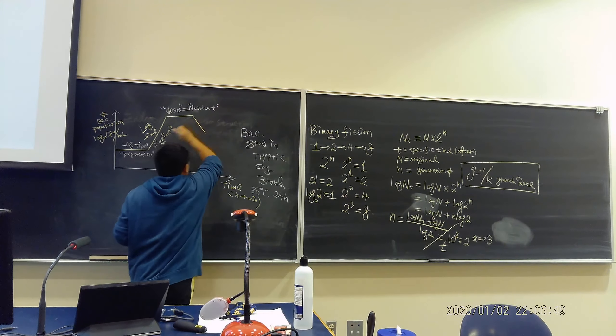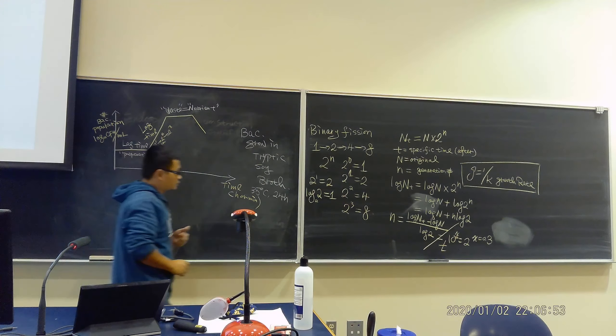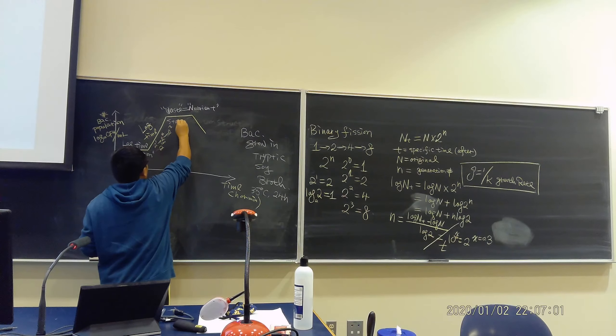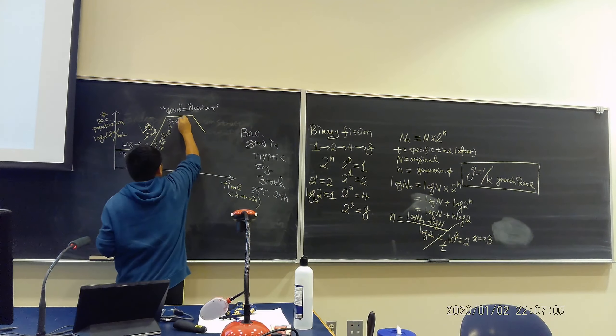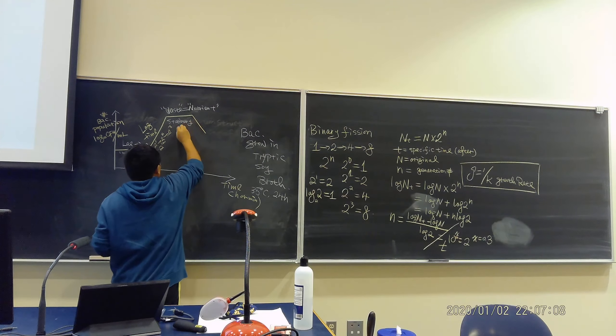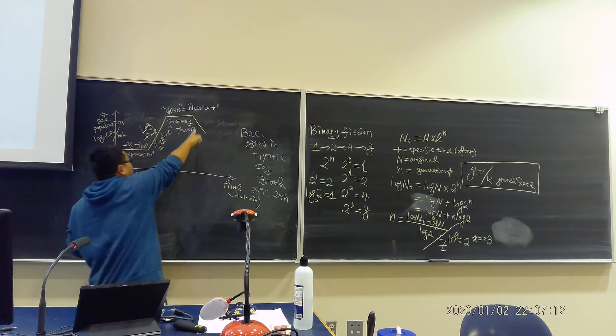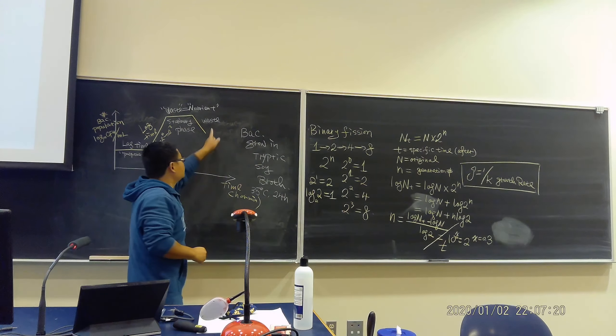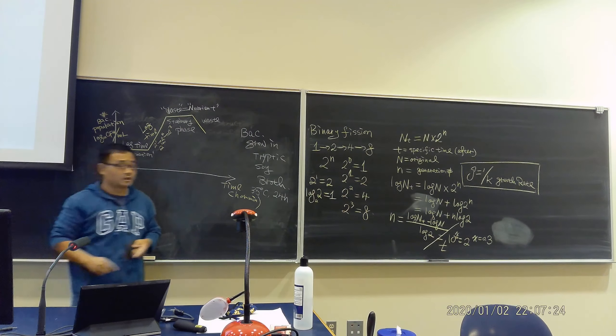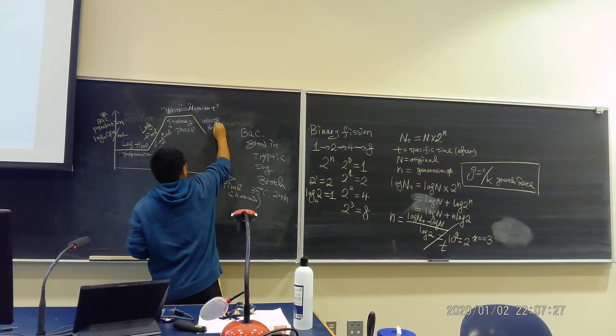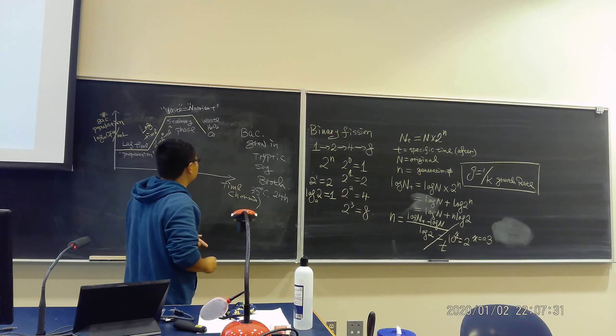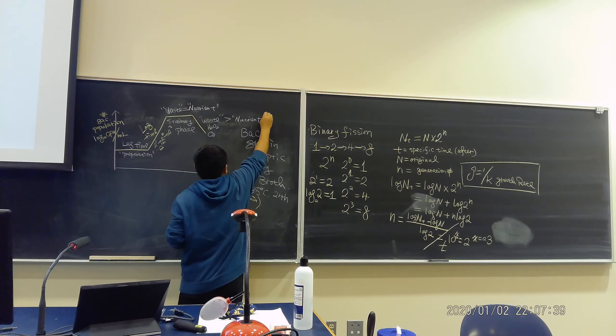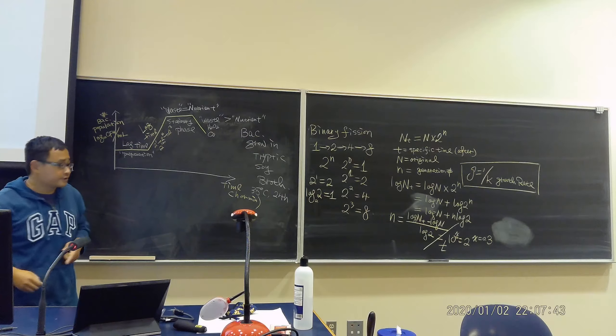All the nutrients in a growth media have been used up. Therefore they go through a very flat curve called stationary phase. Then later on, at this stage, the waste starts to accumulate. No more nutrition can be used. Most of the waste is a toxic chemical for bacteria, like H2O2, like O3, or other chemicals. When they start to accumulate, this waste is more than nutrients. Therefore the bacteria numbers start to decrease. We call it death phase.